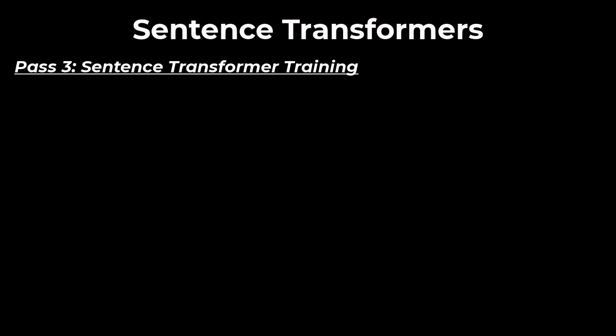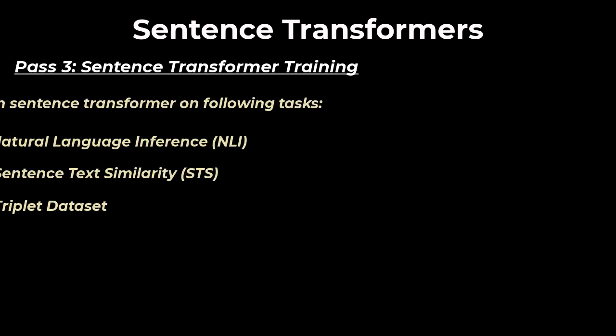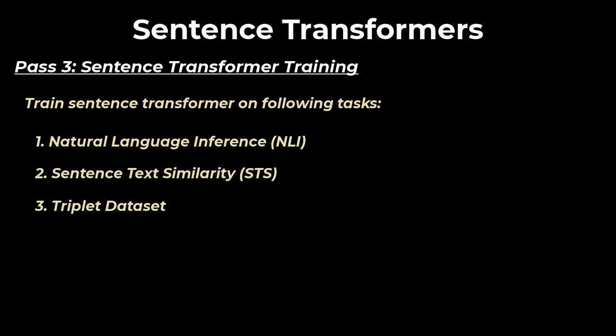Now let's get deeper with pass 3. BERT is good at word representations. But we want to make a sentence transformer that's good with sentence representations. To do this, we fine-tune BERT on three sentence-related tasks. Natural language inference, sentence text similarity, and the triplet dataset. Let's take a look at each of these.